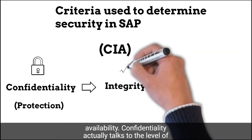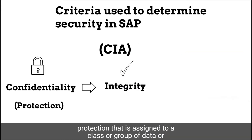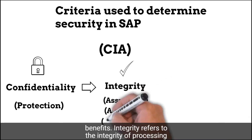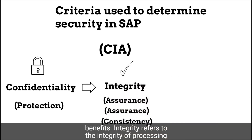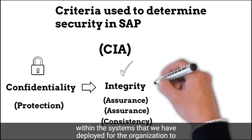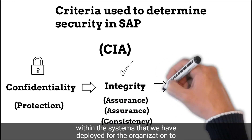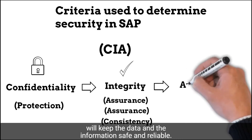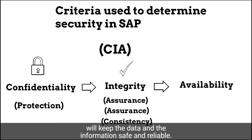Confidentiality talks to the level of protection that is assigned to a class or group of data or information in an organization — of course, it's about cost benefits. Integrity refers to integrity of processing within the systems that we have deployed for the organization to support our operations and guarantee the performance of various tasks in a manner that will keep the data and information safe and reliable.